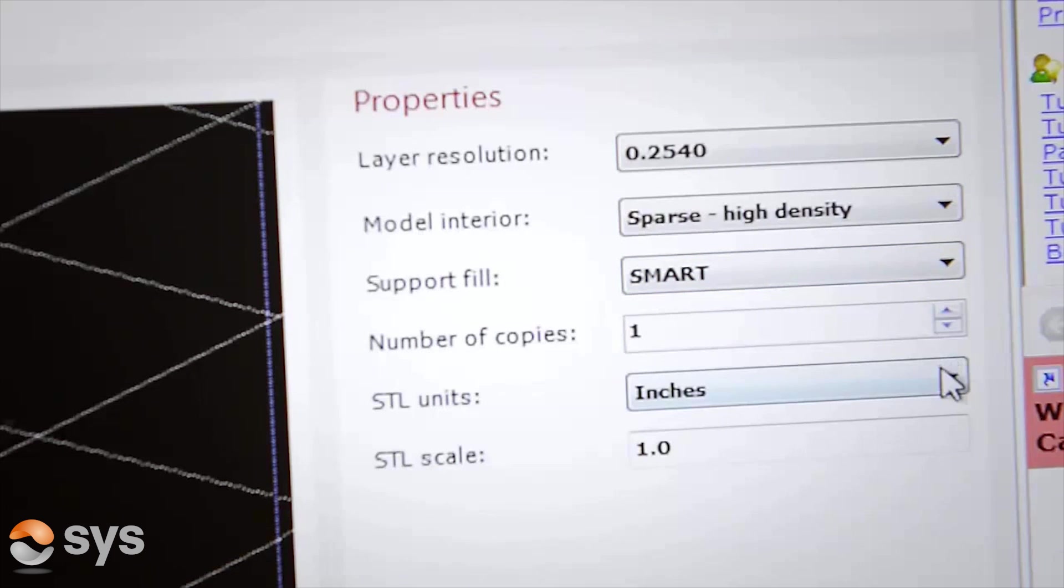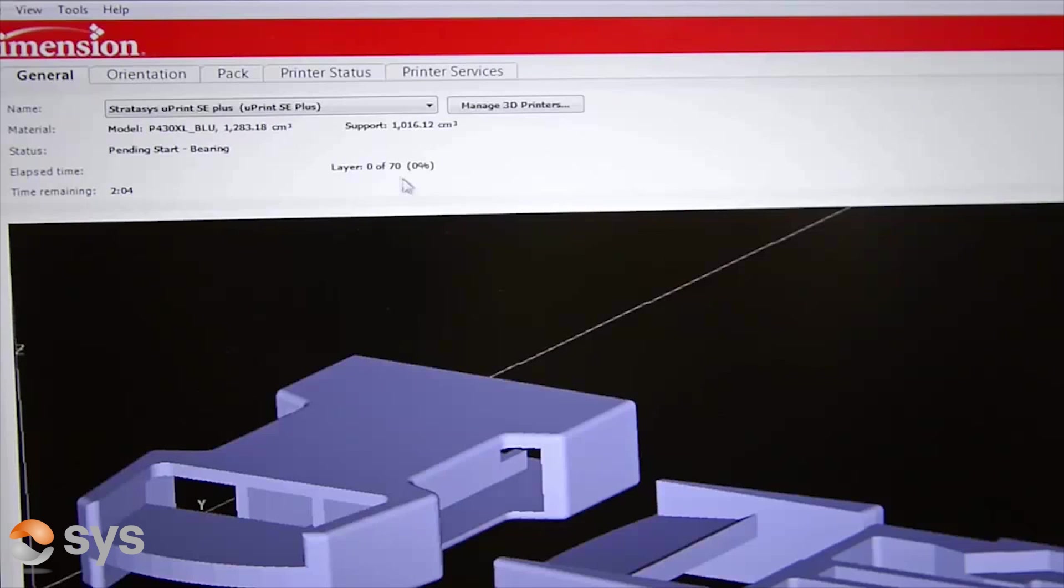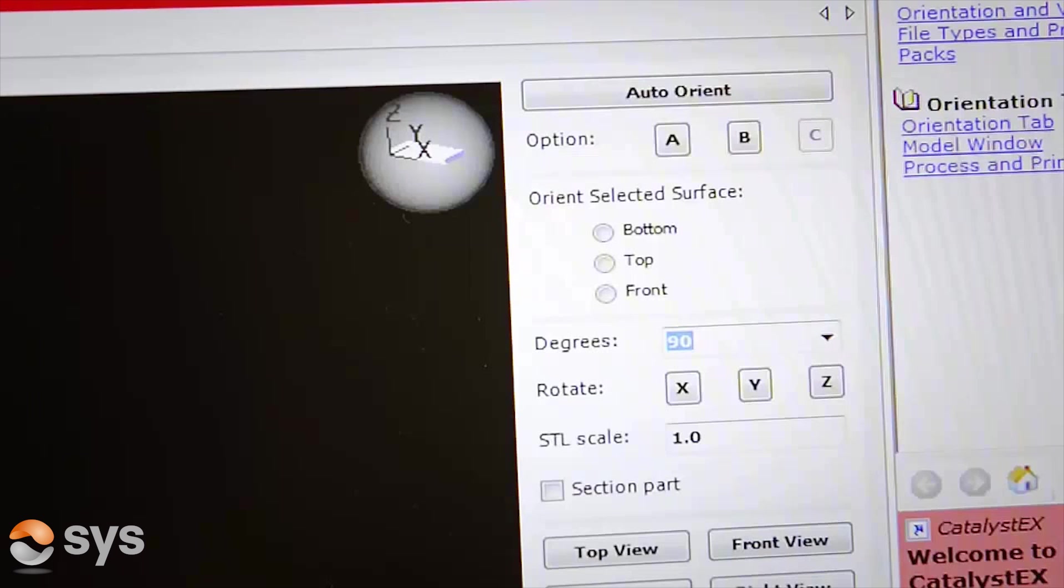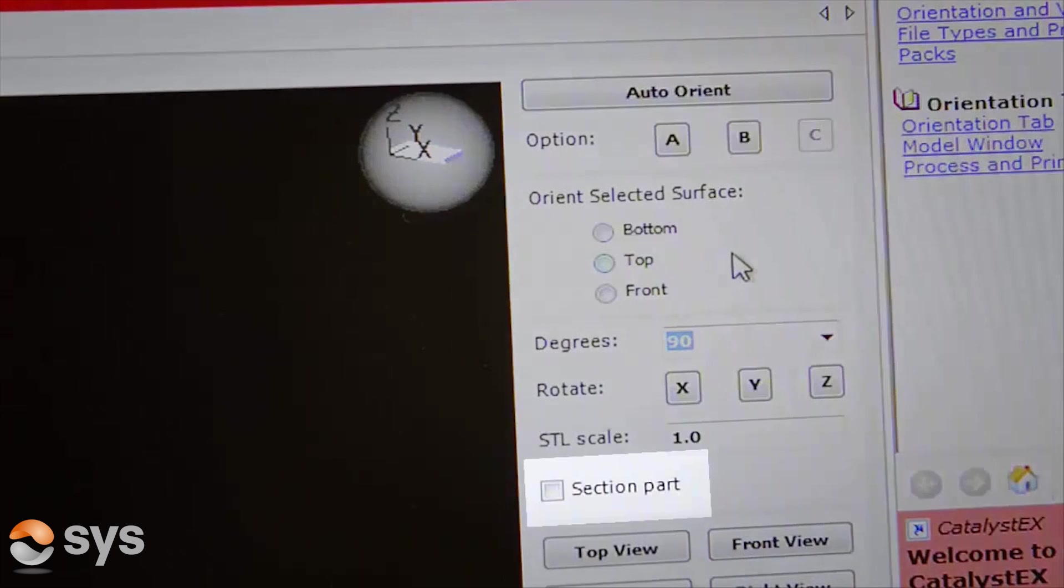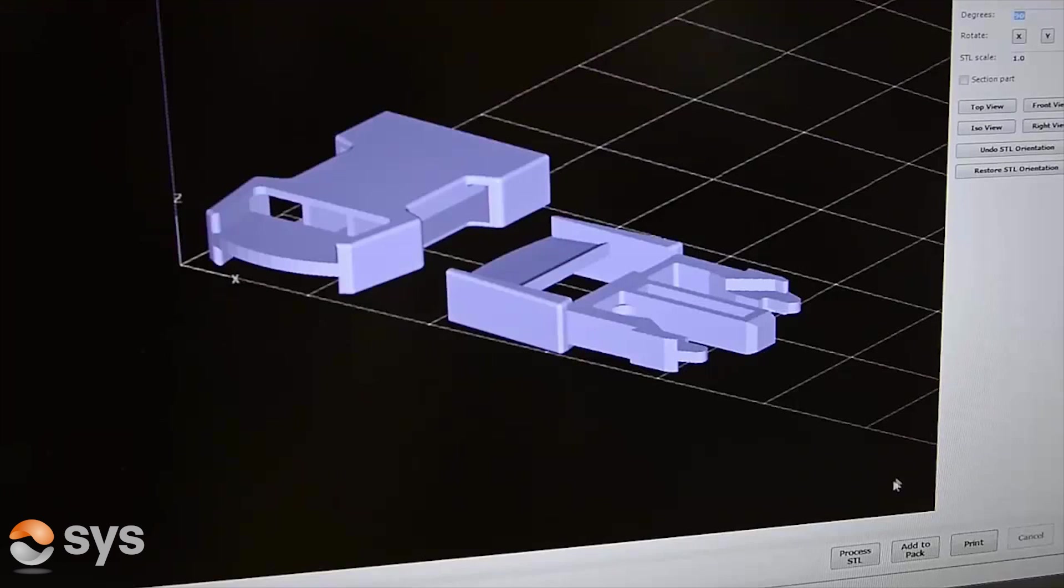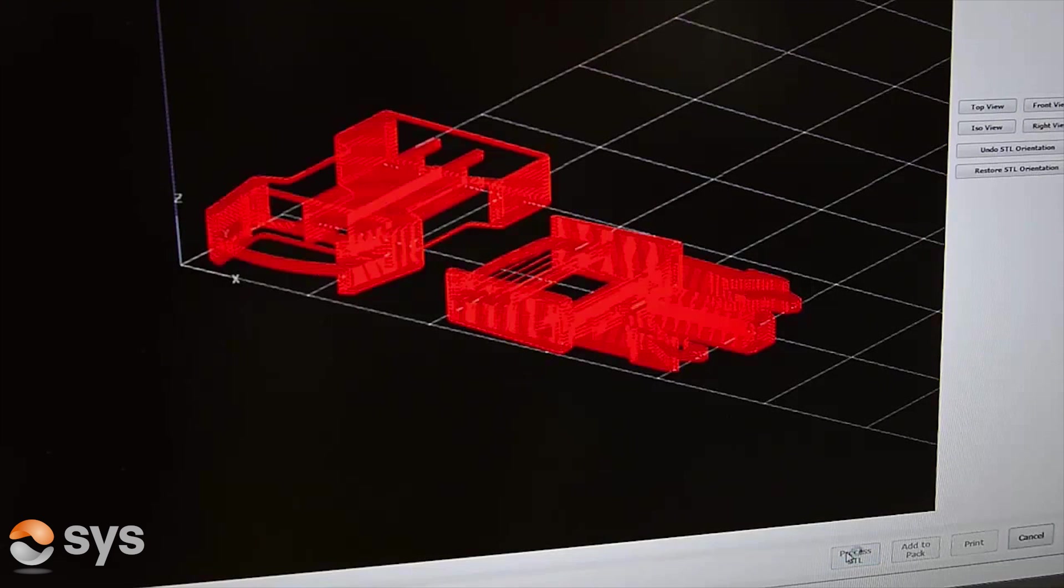Both machines have use of soluble support material, although we will look closer at these differences later. The orientation tab gives full control over all three axes with features like automatic orientation and manually entered specific adjustments. The section part is an interesting feature allowing the opportunity to print larger models than the build chamber itself by splitting the models into multiple parts.